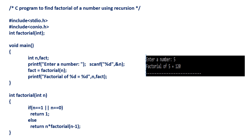In this video, we write a C program to find the factorial of a number using recursion.